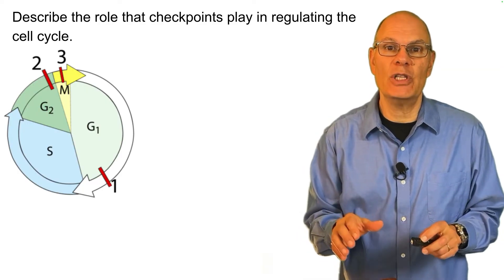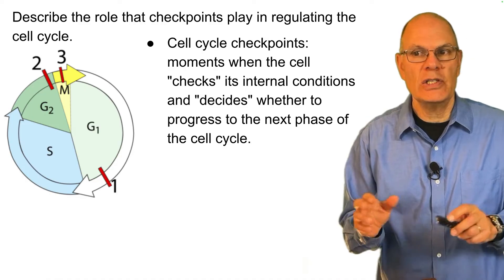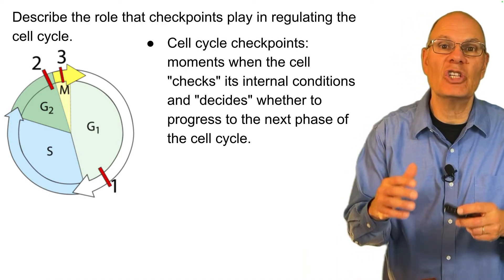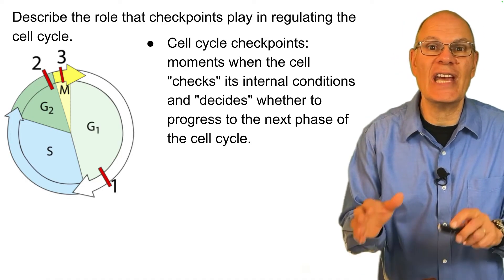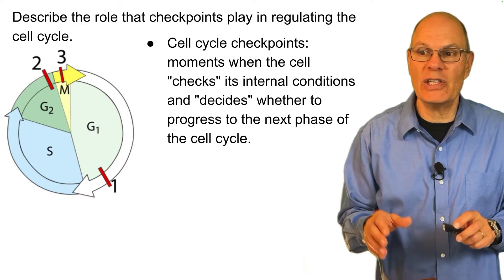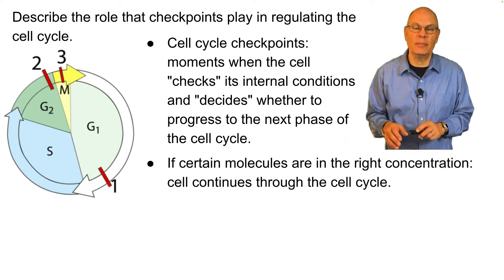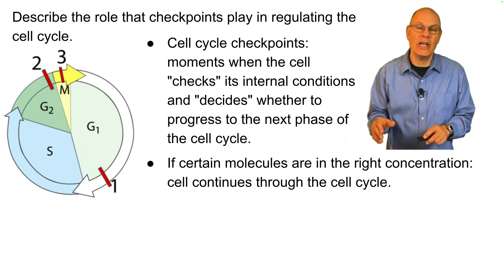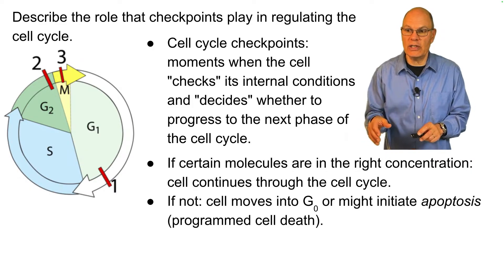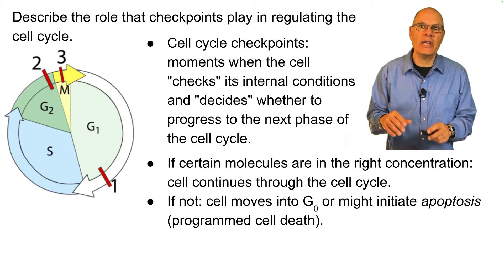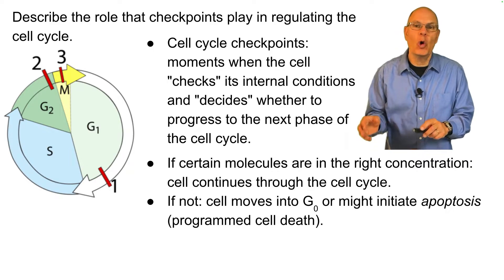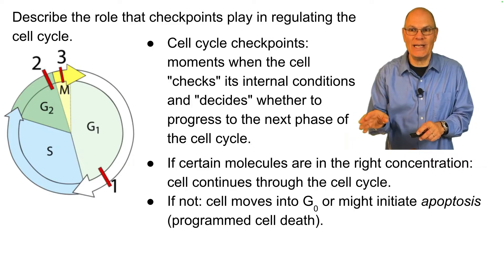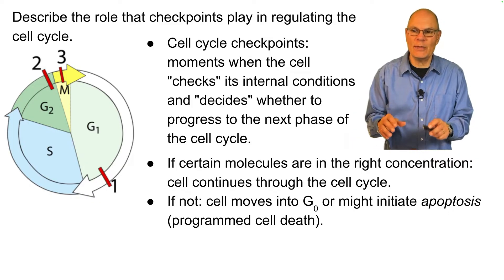Cell cycle checkpoints are moments when the cell checks its internal conditions and decides whether to progress to the next phase of the cell cycle. If certain molecules are in the right concentration, then the cell continues through the cell cycle. If not, the cell moves into G0 or might initiate apoptosis, which is programmed cell death.